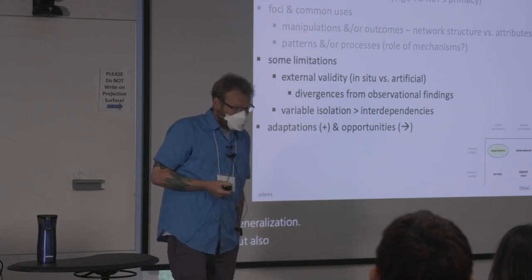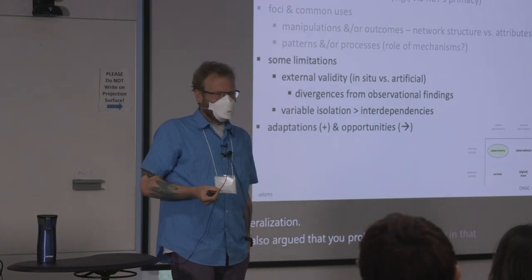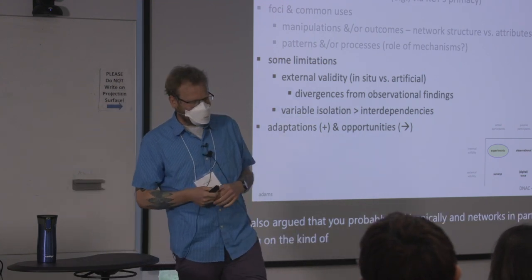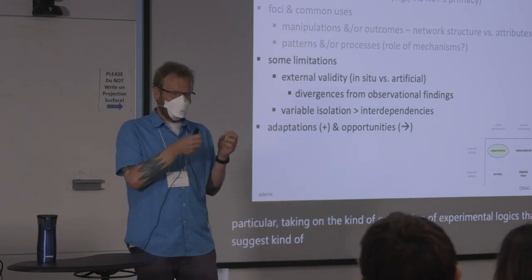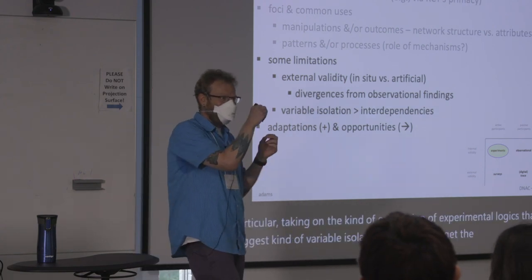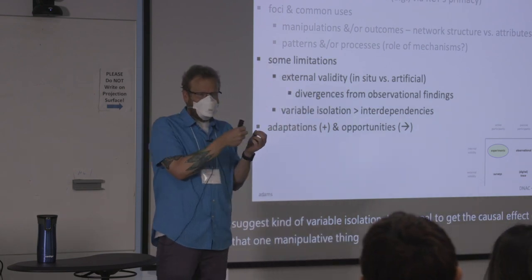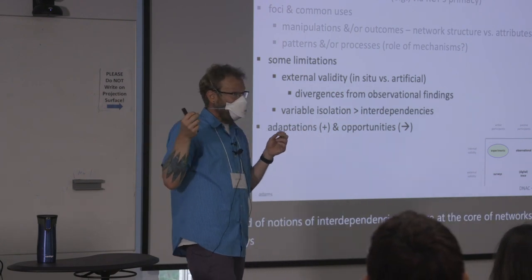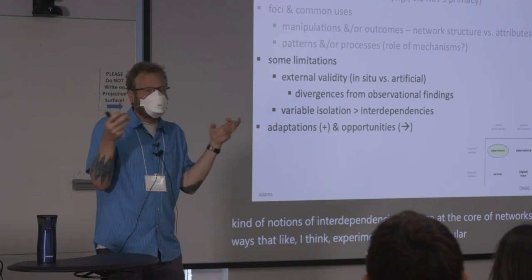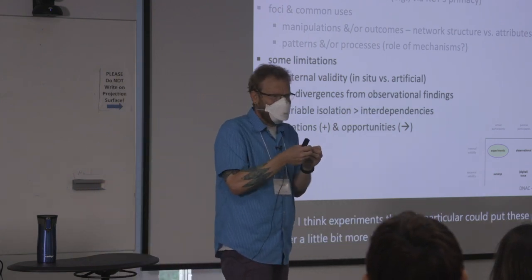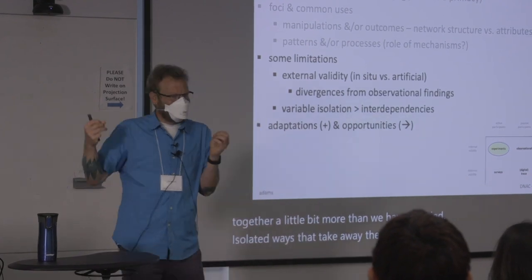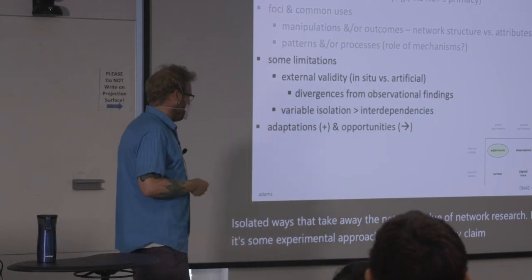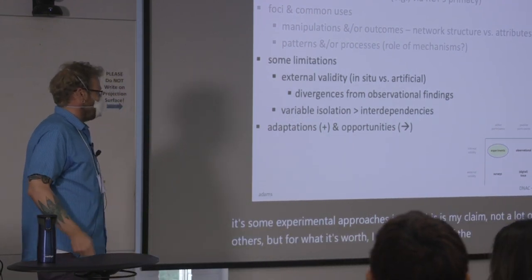I would also argue, ironically, that in networks in particular we've taken on the orientation of experimental logics suggesting variable isolation as our goal to get the causal effect of one manipulated thing — in ways that lead us to detract from the notion of interdependencies that are at the core of networks. I think experiments in particular could put these pieces back together more than we have. We've tried to isolate in ways that take away the network value of network research in some experimental approaches.